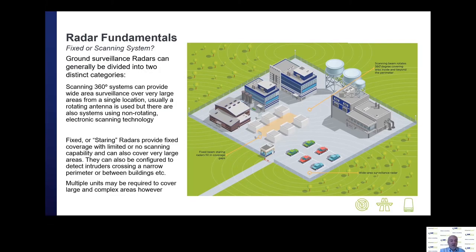Moving on from frequency, ground surveillance radars can generally be divided into two distinct categories. Scanning systems which scan over 360 degrees can provide wide area surveillance over very large areas from a single location — usually a rotating antenna, though non-rotating electronic scanning technologies also exist. There are also commercially available fixed or staring radars, which provide fixed coverage with limited or no scanning capability. They can cover very large areas or detect intruders crossing very narrow areas, but you're probably going to need multiple units to cover large and complex sites. Quite often a site will have a combination of both fixed staring radars and scanning systems.